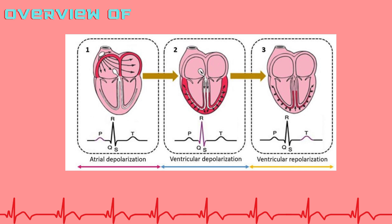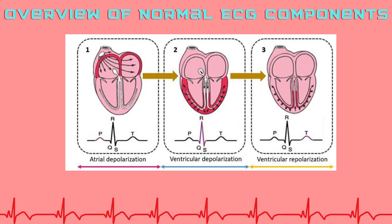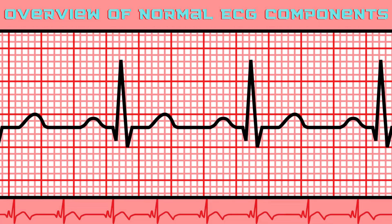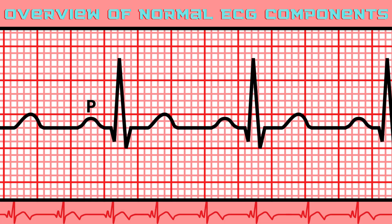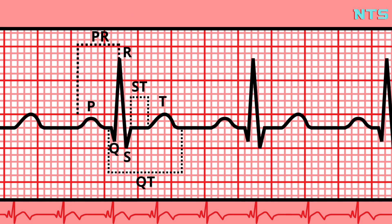A normal ECG reflects the orderly depolarization and repolarization of the heart. It consists of the following elements: the P-wave, PR-interval, QRS-complex, ST-segment, T-wave, and QT-interval. Each corresponds to a specific event in the cardiac cycle.